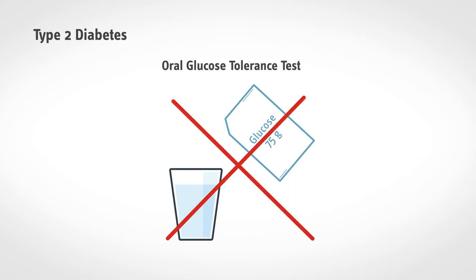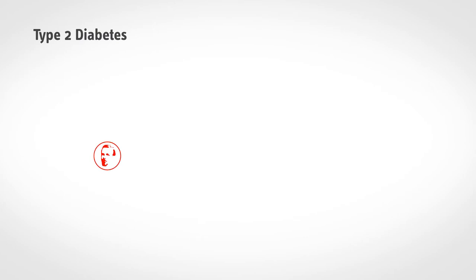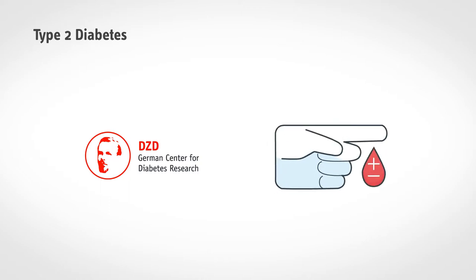However, this test is expensive. Researchers at the German Center for Diabetes Research are currently developing a test in which increased type 2 diabetes risk can be determined from a drop of blood.